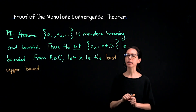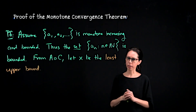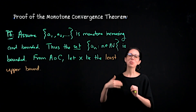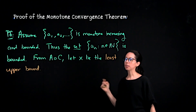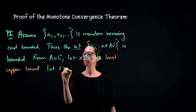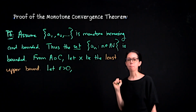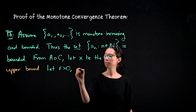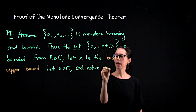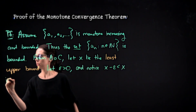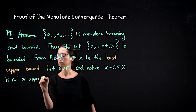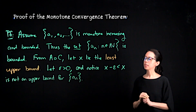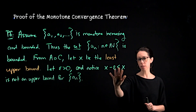So x is greater than or equal to every term in the sequence, and any other number which is greater than or equal to every term has to be at least as large as x. This means if I take x and subtract off a little bit, I'm no longer greater than or equal to every term. Let epsilon be greater than zero. Notice that x minus epsilon is smaller than x, so it cannot be an upper bound for the set of sequence terms, because x is the smallest upper bound. So x minus epsilon is not an upper bound for the set.